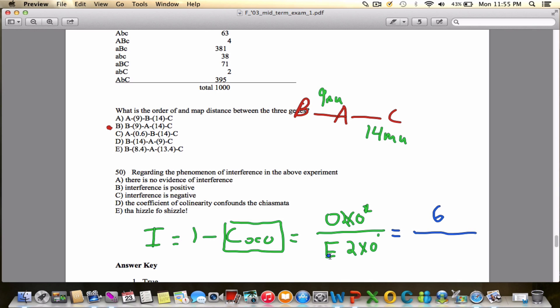But how do I calculate my expected number of double crossovers? Well, remember, we take our map units here. So we have 9 map units and 14. And I'm going to divide 9 by 100, and I'm going to multiply that by 14 divided by 100.